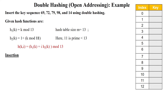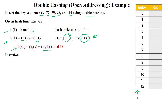Now I want to store the values 69, 72, 79, 98, and 14 into the hash table using double hashing. The first hash function is h1(k) = k mod 13, where the table size is 13. The second hash function is 1 + k mod 11, where 11 is the first prime number smaller than the table size 13. For searching the index, we use h(k, i) = h1(k) + i × h2(k) mod 13.